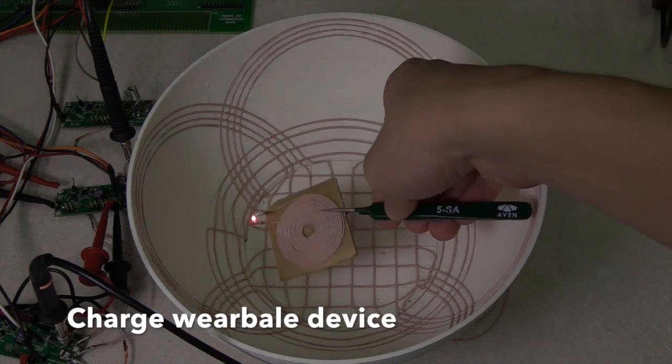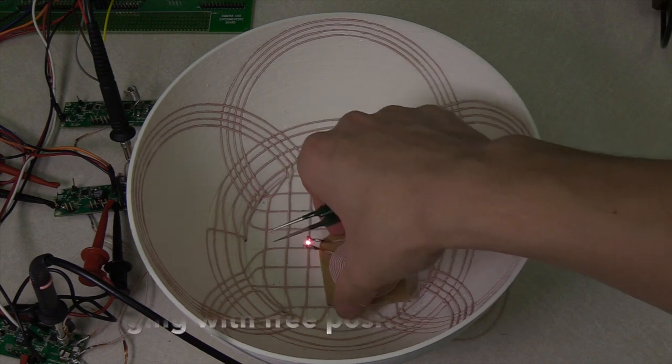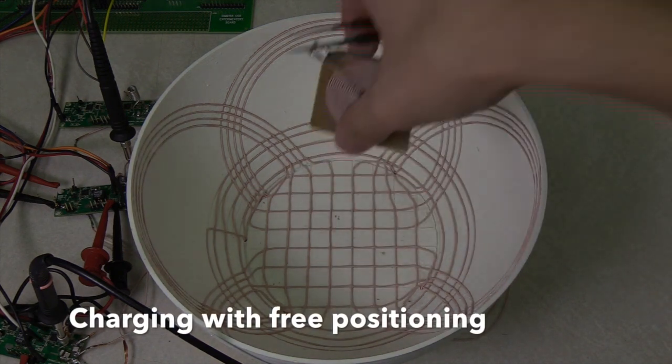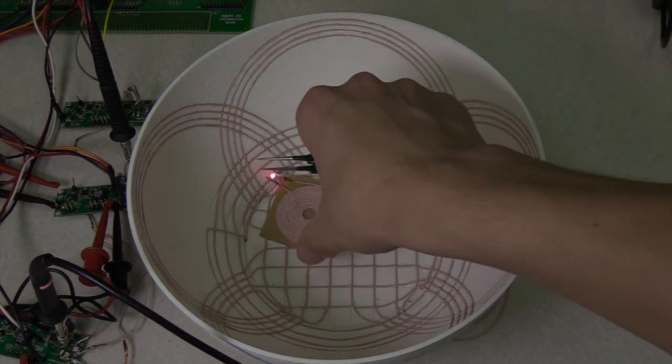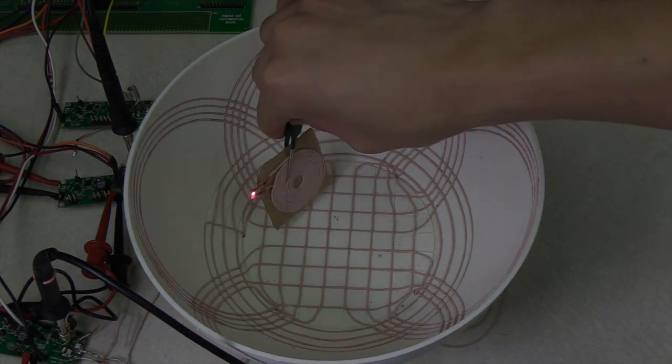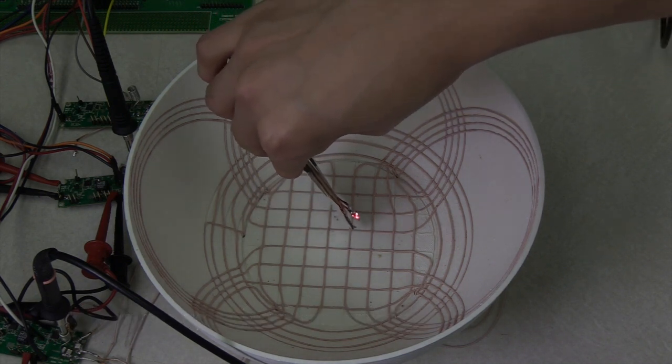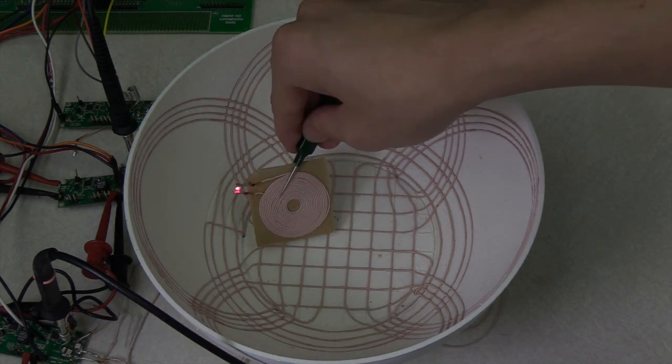For small wearable devices, a small coil and an LED light are used for the demo. As you can see here, the LED can be lit with different positioning. And since we have an omnidirectional field at the bottom, the charging bowl can actually charge wearable devices with any orientation.